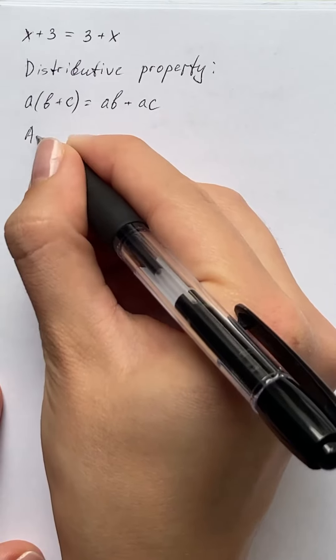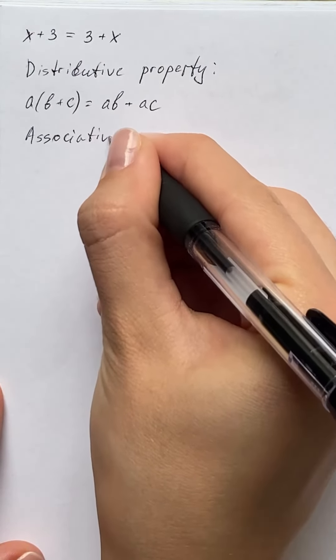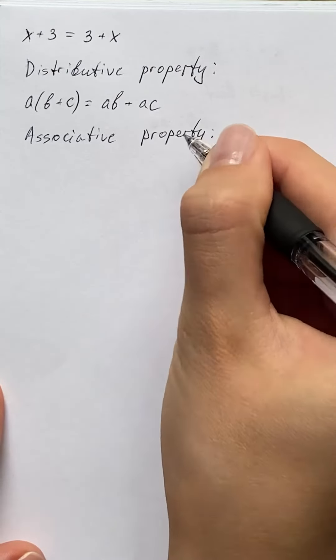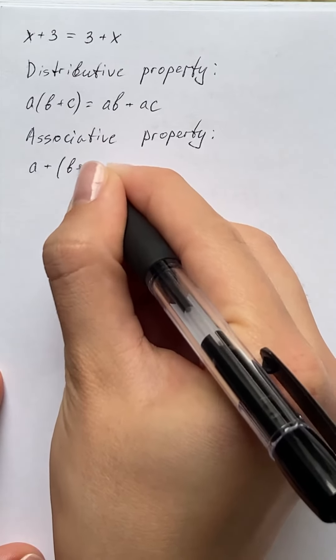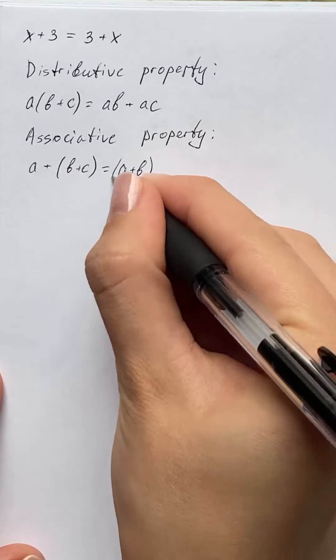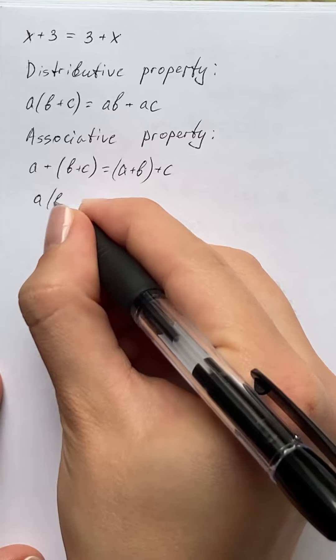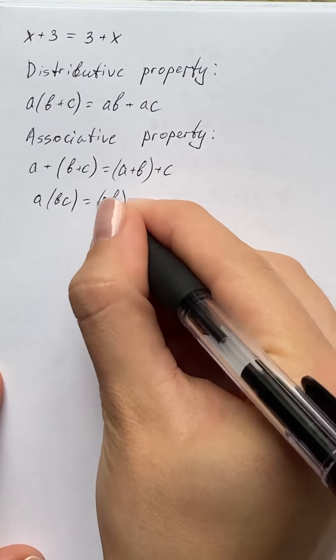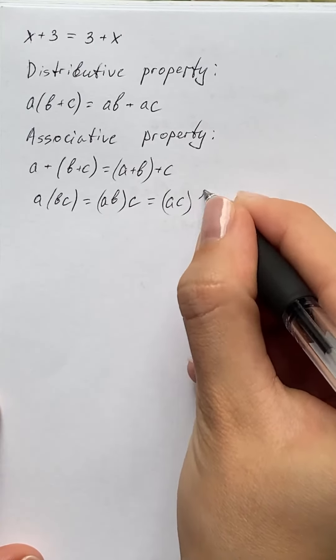The next one is the associative property, which looks like a + (b + c) = (a + b) + c, or a(bc) = (ab)c = (ac)b.